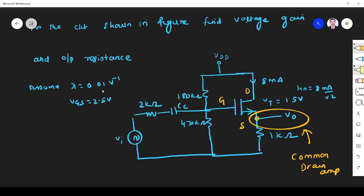If you have any doubt please refer my video on common drain amplifier before solving this problem. What are the details given? They have assumed lambda is equal to 0.01 per volt, that is we have to take channel length modulation effect. If you are taking channel length modulation effect we have to include ro in the equivalent circuit. VGS is given, threshold voltage VT is given, km is given.